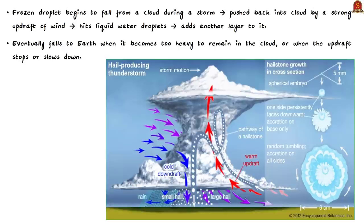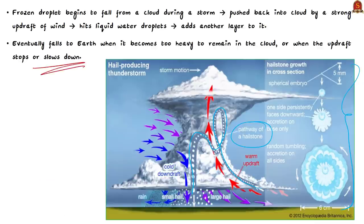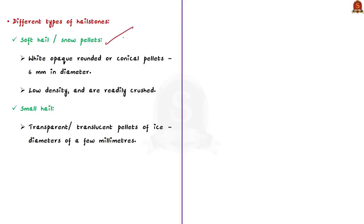Hailstones are formed by layers of water that attach and freeze in a large cloud. A frozen droplet begins to fall from a cloud during a storm but is pushed back up into the cloud by a strong updraft of wind. When lifted, it hits liquid water droplets that then freeze on its surface, adding another layer. Hailstones eventually fall to earth when they become too heavy to remain in the cloud, or when the updraft stops or slows down.